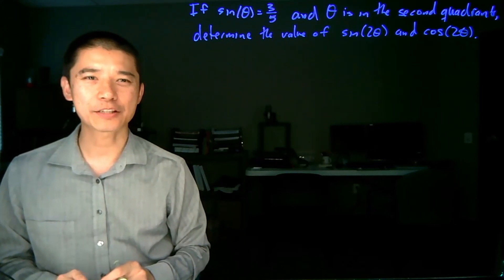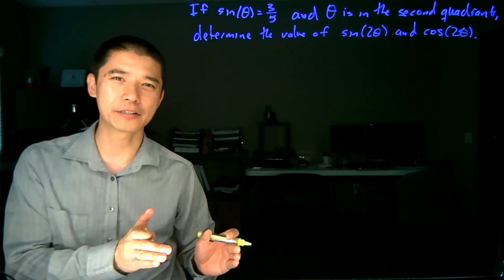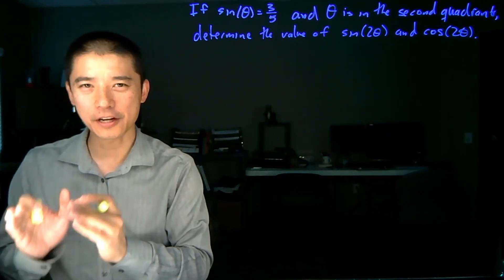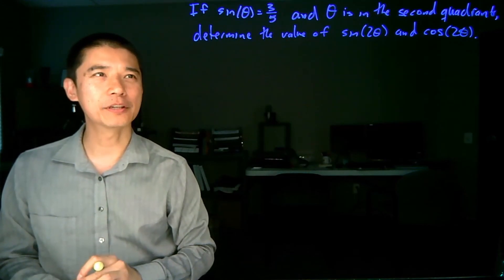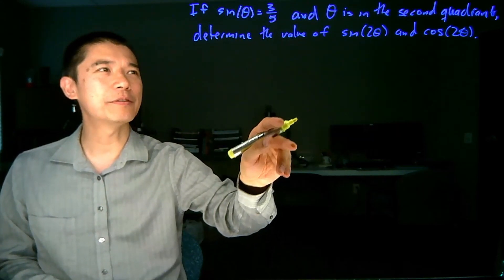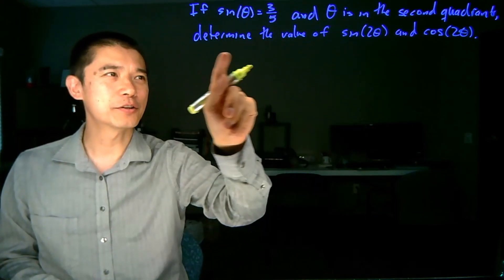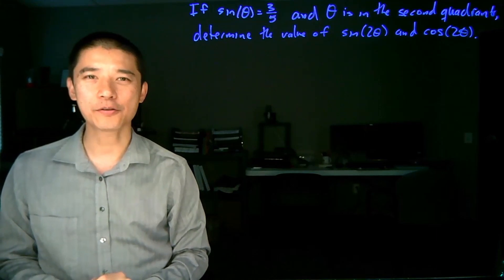One of the problems that we've run into in the past was the calculation of one trigonometric function based on values about another trigonometric function. This is the same thing except using the double angle formulas. If sine of theta is equal to 3/5 and theta is in the second quadrant, determine the value of sine of 2 theta and cosine of 2 theta.